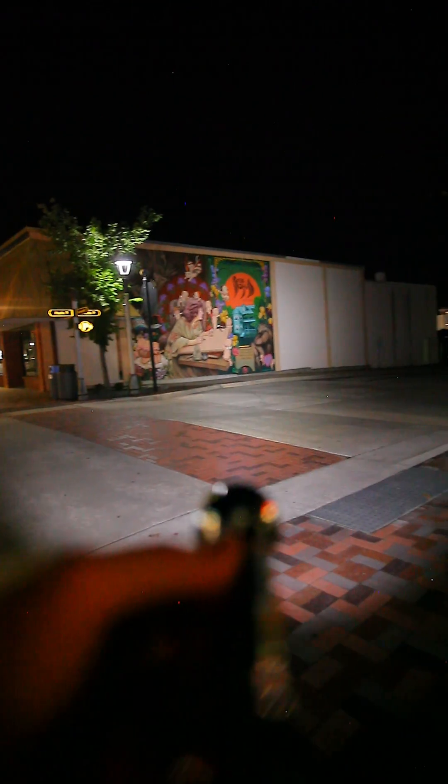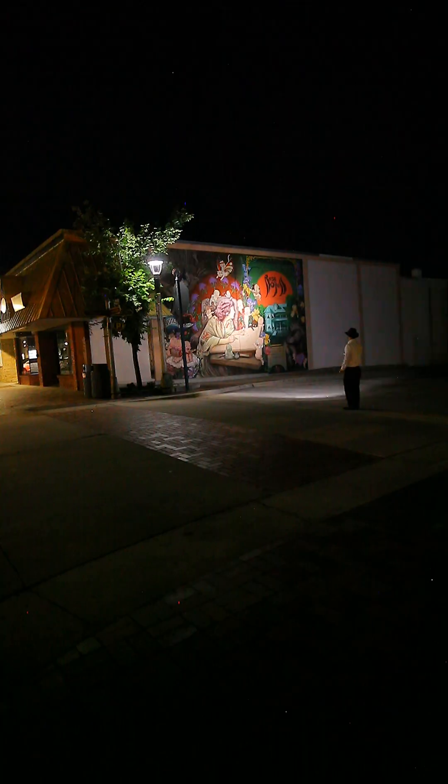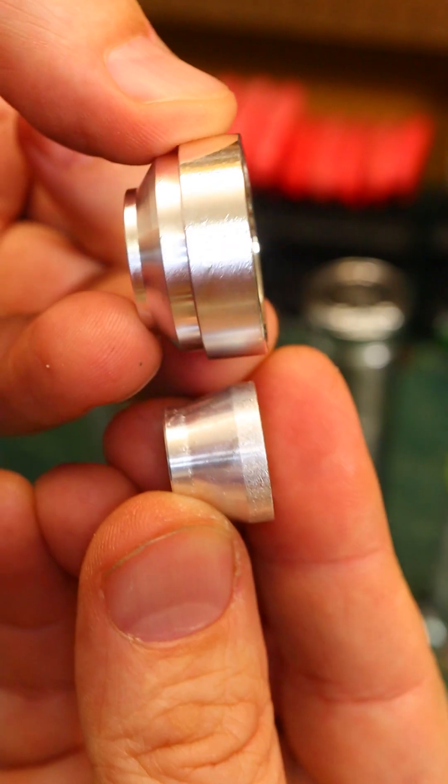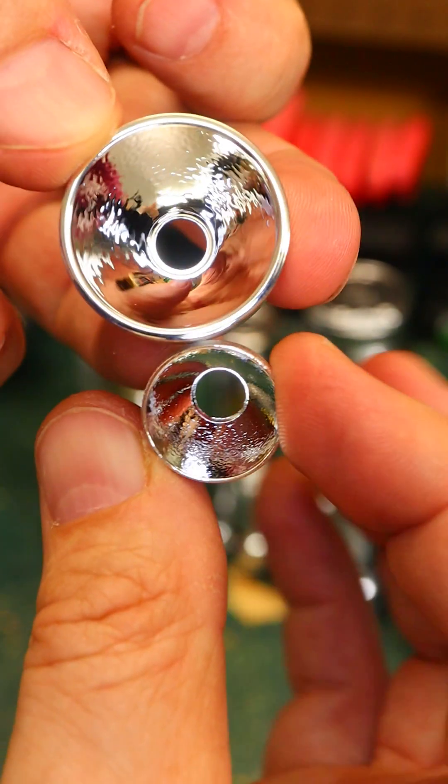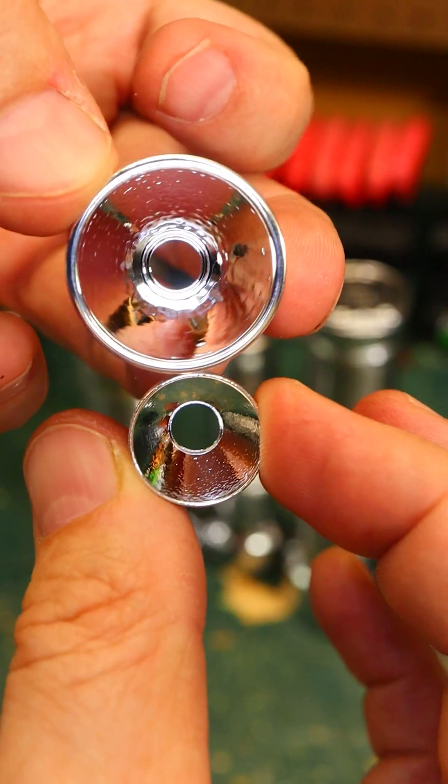First, Maglite 2D and Ray-O-Vac 2D. Even though the C and D have different reflectors, the beams are pretty similar. The D has a tighter hot spot giving it a slight range advantage, the Ray-O-Vac 2D. Now the Eveready 2C.